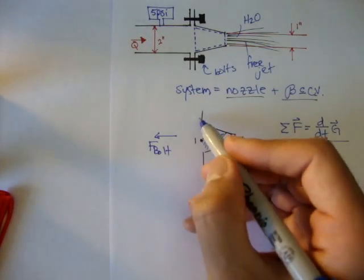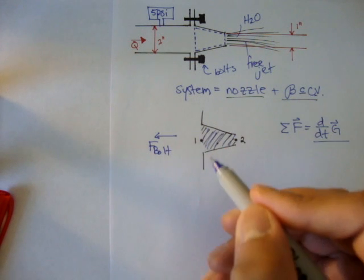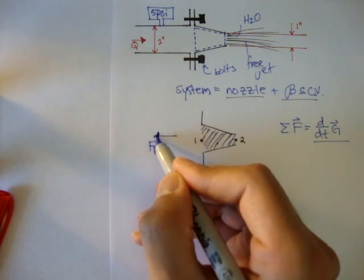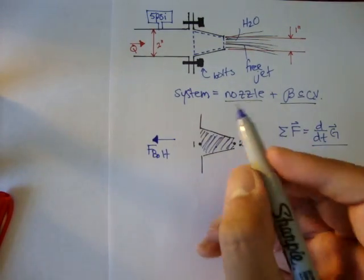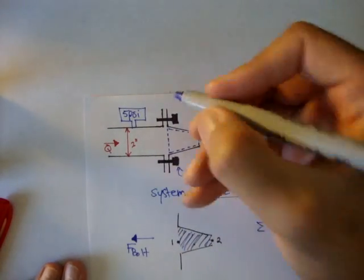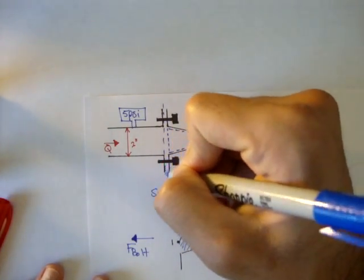So we can just say, all those bolts that are placed around the nozzle, we can just find a resultant force. That's what they want. And then we cut off the nozzle here.